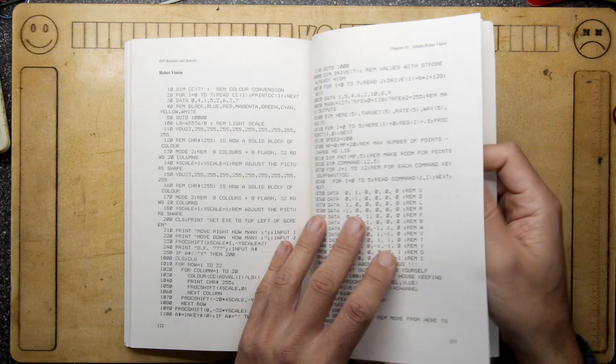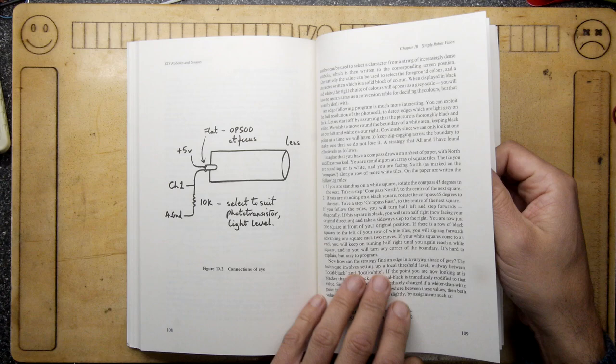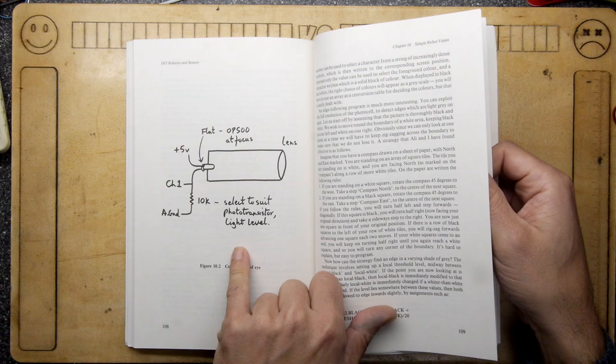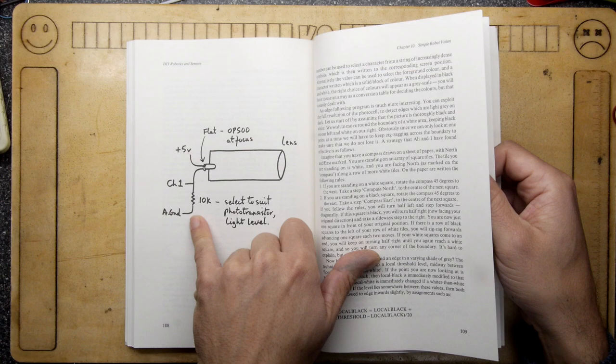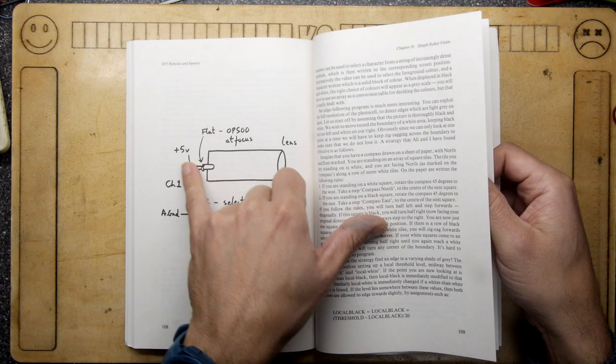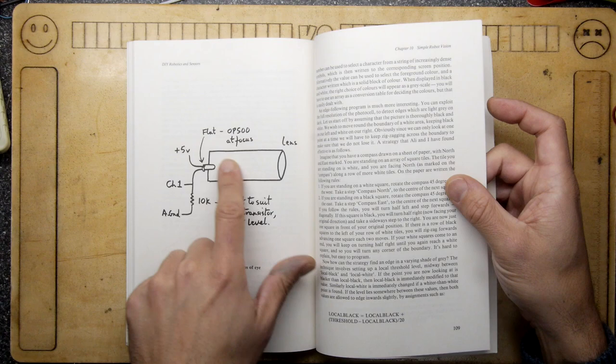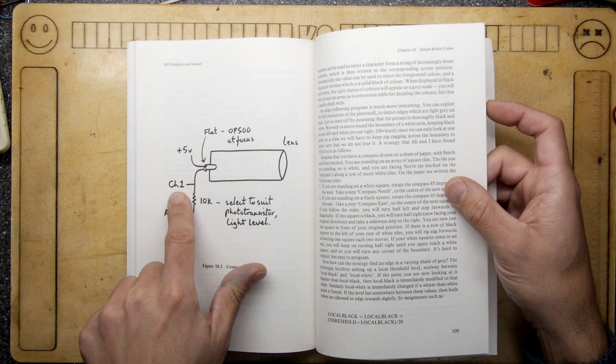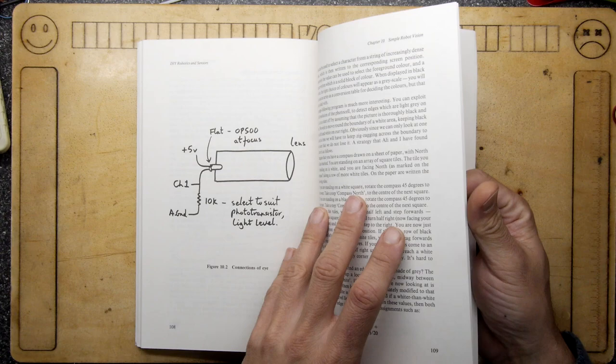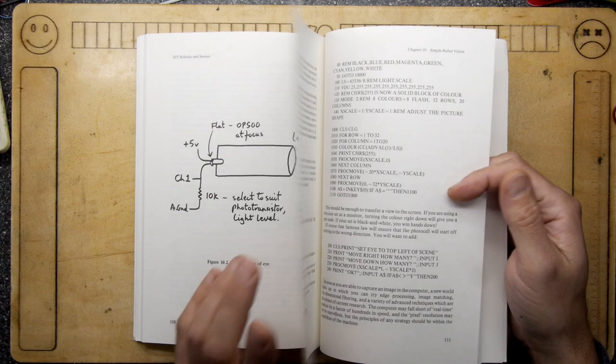Robot vision. Hang on, the connections of the eye. The eye, it's basically a photo diode or photo transistor whatever. You can see here as light changes it's going to affect what channel one is detecting. Channel one will be detecting an analog signal here, a bit unlike the light pen which is really just looking for a very on-off. This will give you a range of values.